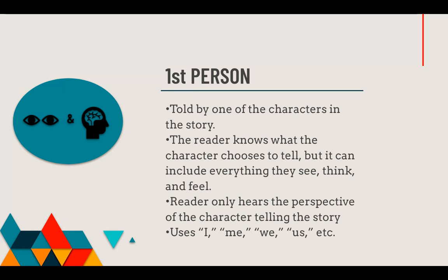You'll see the icons I have in the circle — the eyes and the brain — because first person can tell you what they see and what they think and feel. Now don't get this confused with meaning there's only one narrator in the story. I've recently read several chapter books where each chapter has a different character speaking, so in the book you have several narrators, but for their chapter we only hear from them — we only hear their perspective. It changes with every chapter, but it's still first person point of view because it's only that one character speaking at a time.